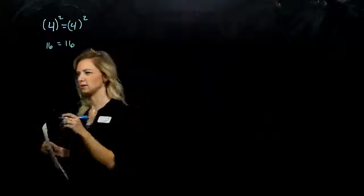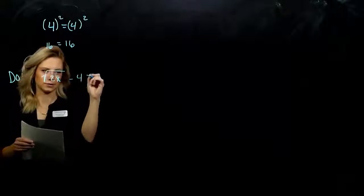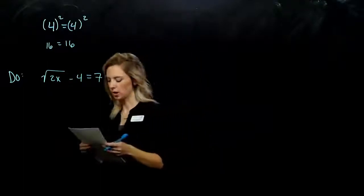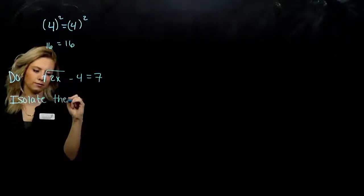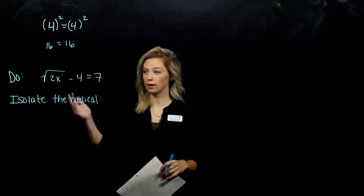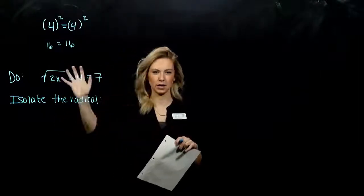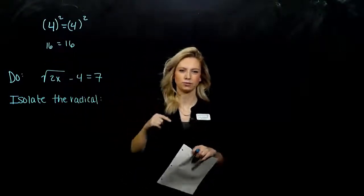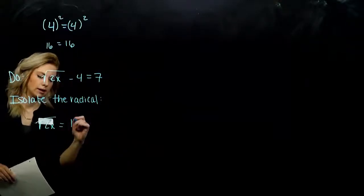We're going to use that to solve a few radical equations. The very first one: the square root of 2x minus 4 is equal to 7. The very first thing we always want to do with these problems is isolate the radical. If I only have one radical, I need to get that thing on its own. So negative 4 has to move to the other side. When we add it, we're looking at root 2x is equal to 11.